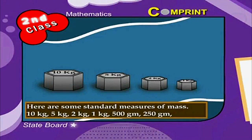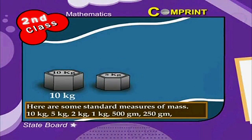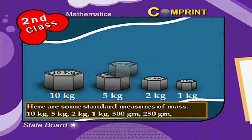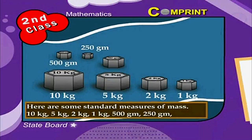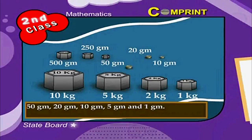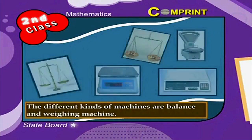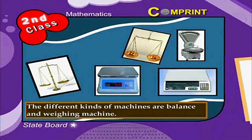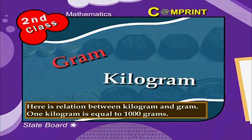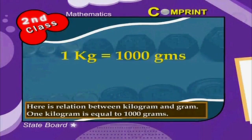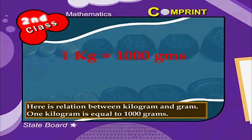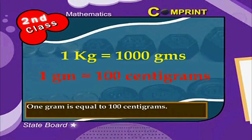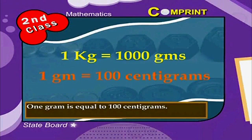Here are some standard measures of mass: 10 kg, 5 kg, 2 kg, 1 kg, 500 grams, 250 grams, 50 grams, 20 grams, 10 grams, 5 grams and 1 gram. The different kinds of machines used are balance and weighing machines. The relation between kilogram and gram is: 1 kilogram is equal to 1000 grams, and 1 gram is equal to 100 centigrams.